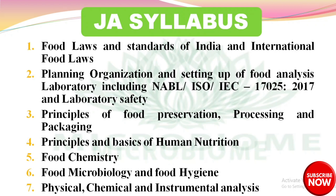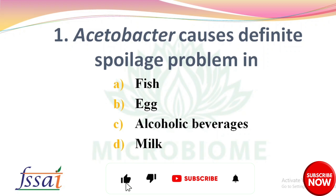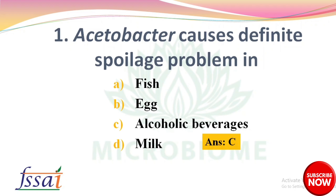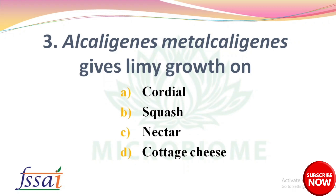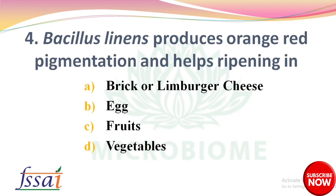Question: Tobacco causes definite spoilage problem in — options: fish, egg, alcoholic beverages, milk. The right answer is option C, alcoholic beverages. Next question: Alkalogens viscolactis causes ropiness in — options: bread, milk, water, juice. The right answer is option B, milk. Next: Alkalogens met gives slimy growth on — options: cordial, squash, nectar, cottage cheese. The right answer is option D, cottage cheese.